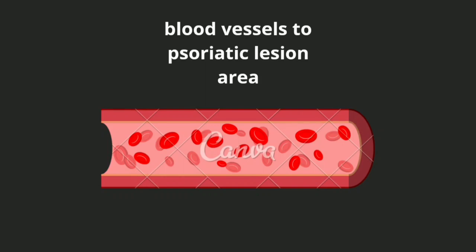These T cells will then migrate from the lymph node through the lymphatics into the bloodstream and back to the skin, where they will form the psoriatic plaques. Which part of the skin they migrate to depends upon the chemokines secreted by the skin to attract them.